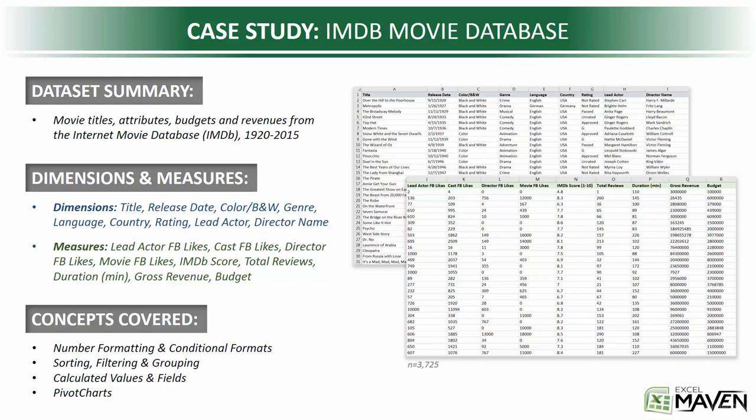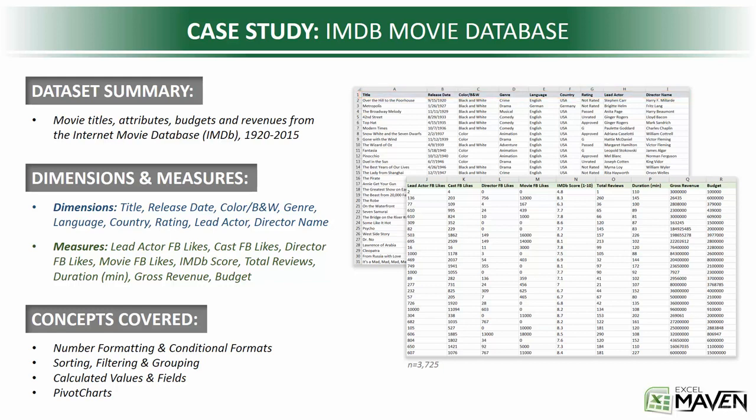In this case, our dimensions include the movie title, the release date, whether it was color or black and white, what genre it falls into, the language, country, rating, and lead actor and director name.